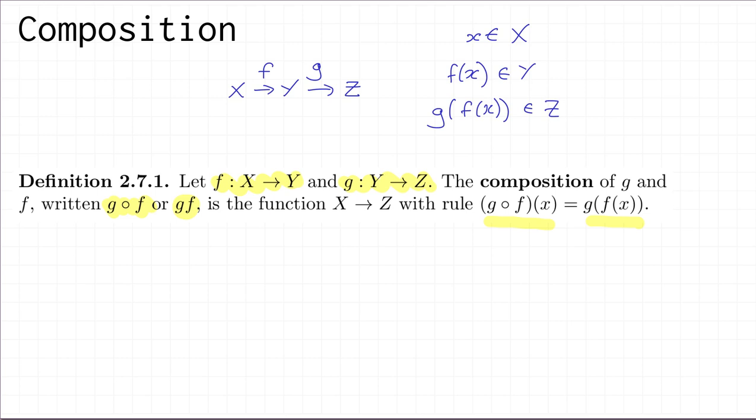Let me say one important thing about composition that people sometimes forget or get confused by: if you have g composed with f, that is not the function whose rule is "do g, then do f." It's the function whose rule is "do f, then do g." So we write g∘f, but the rule is: do f, then do g.